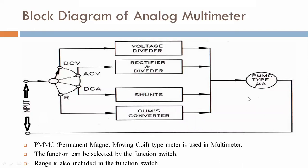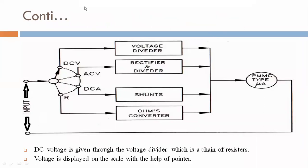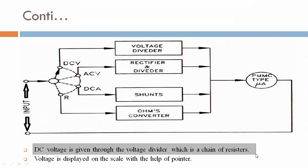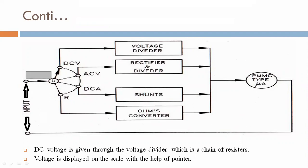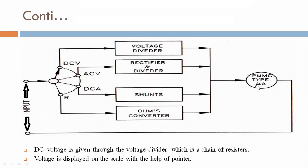For DC voltage measurement: DC voltage is first given through the voltage divider, which is a chain of resistors. Any value in that chain of resistors can be selected. The voltage is then displayed on the scale with the help of the pointer on the PMMC type meter. That is the method for measuring DC voltage.